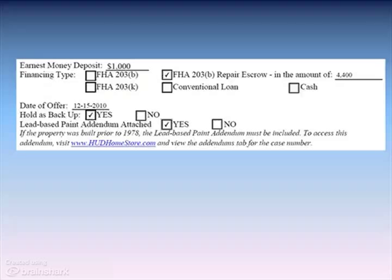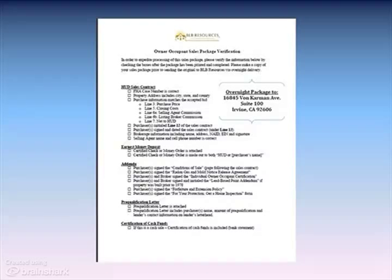If your buyer would like his bid to be considered as backup to another bid, check the box. Check yes for the lead paint addendum for all properties. There is a checklist you can use to prepare an owner-occupant sales package after your bid is accepted. You have 48 hours from the time your bid is accepted to deliver the sales package to the asset manager. Use a trackable delivery method that will guarantee on-time delivery — do not pinch pennies on this. You do not want to tell your buyer his bid acceptance was canceled because you failed to deliver the documents on time.